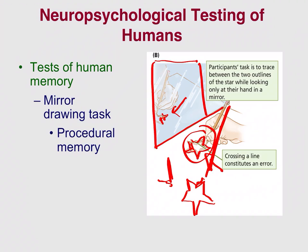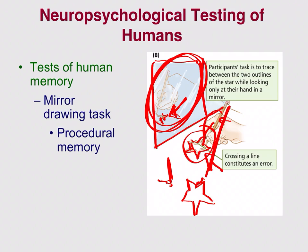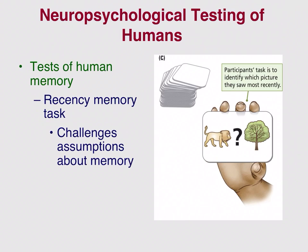This task relates to patient HM, whose hippocampi were removed, impairing his ability to form new memories but not his procedural memory. He would do the mirror drawing test and forget he'd practiced it, yet perform really well because the procedural memory of the hand motion was intact. After practicing many times, he would comment 'I'm really good at this first try!' — not knowing he'd been working on it for weeks. This illustrates how procedural memory can be preserved when other types of memory are damaged.